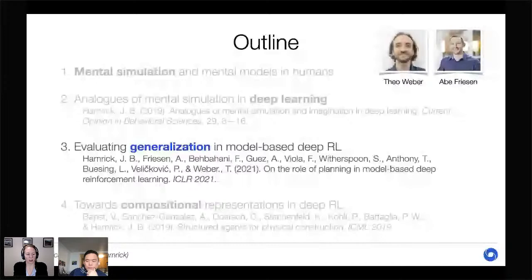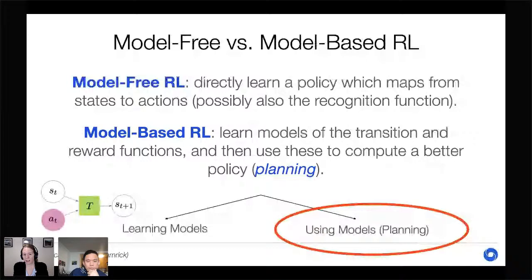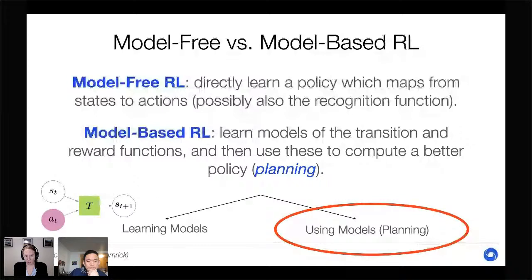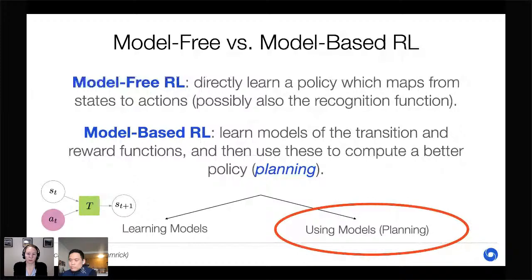This project — just accepted to ICLR, joint work with Tay Weber and Abe Friesen — investigates the role of planning in model-based RL. Model-based RL breaks down into learning the model and using it in planning, but there are many possible choices in the planning algorithm space. We wanted to disentangle the effects of choices like: how much planning is necessary, how far forward should the agent imagine, and most relevantly — to what extent does planning help with generalizing to new scenarios?